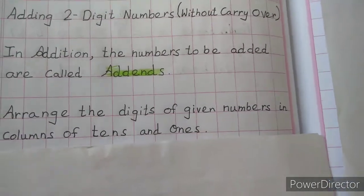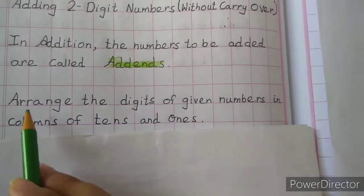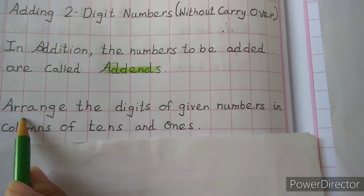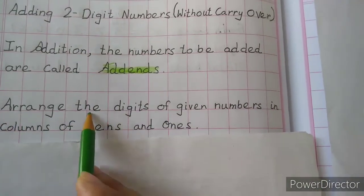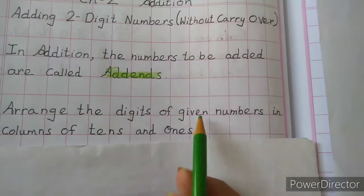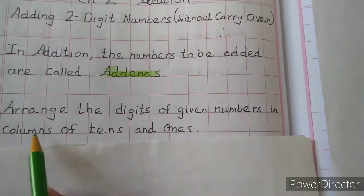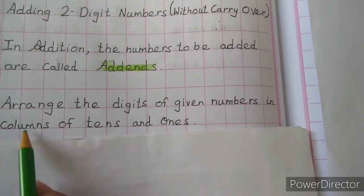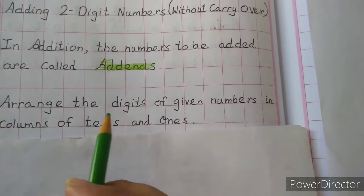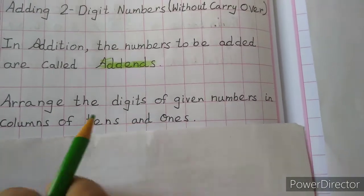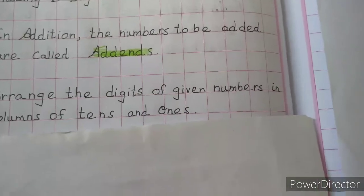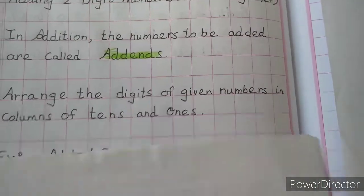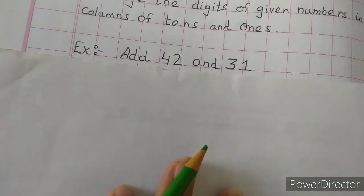While doing addition of a 2-digit number, we have to arrange the digits of the given number in columns of tens and ones. So, we arrange the numbers in the ones and tens columns. Let us take an example and understand.